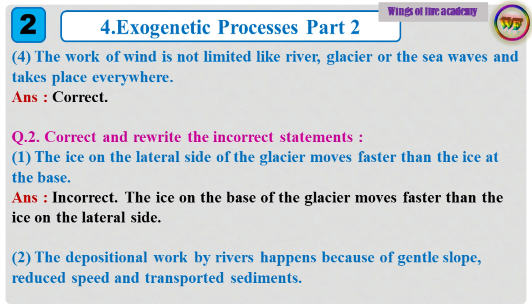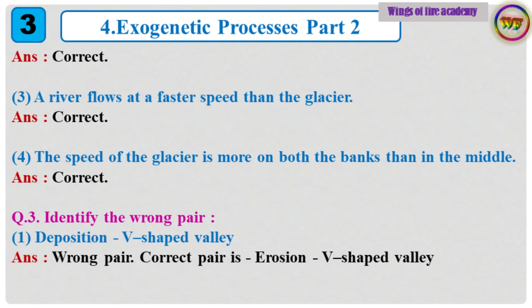Question 2: Correct and rewrite the incorrect statements. 1. The ice on the lateral side of the glacier moves faster than the ice at the base. Answer: Incorrect. The correct statement is: The ice on the base of the glacier moves faster than the ice on the lateral side. 2. The depositional work by rivers happens because of gentle slope, reduced speed and transported sediments. Answer: Correct. 3. A river flows at a faster speed than the glacier. Answer: Correct. 4. The speed of the glacier is more on both the banks than in the middle. Answer: Correct.